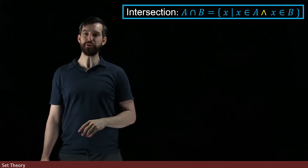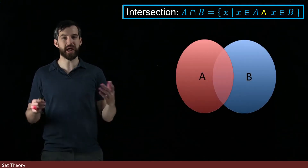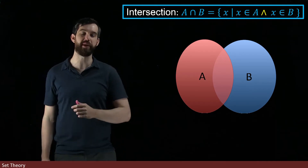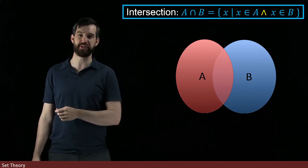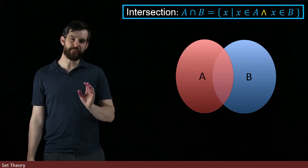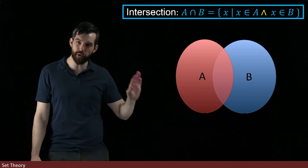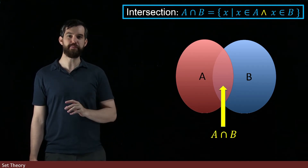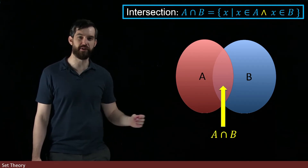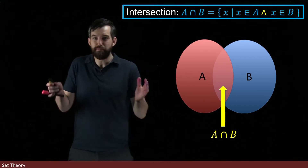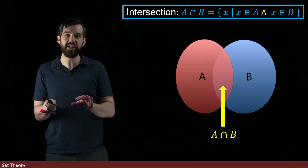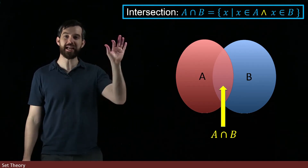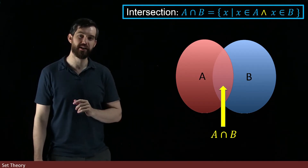We can visualize that in the following way. Let me put up an A and a B, and in this case they are overlapping, so there's something interesting. If I want to say that X is in both A AND B, then the intersection is that bit in the middle — the overlapping shaded region where they are both in A and in B. That's the idea of an intersection.